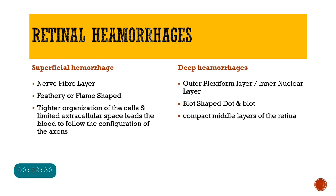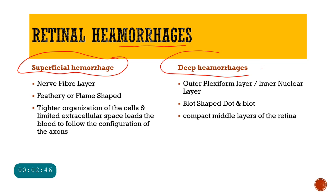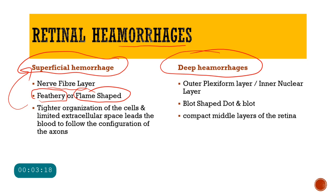The next clinical finding is the presence of retinal hemorrhages — bleeding within the layers of the retina. Based on where they are present, there are two types: superficial hemorrhages and deep hemorrhages. Superficial hemorrhages are present in the nerve fiber layer. Because of the tight organization and limited extracellular space in that layer, blood follows the configuration of the axons, resulting in feathery or flame-shaped hemorrhages.